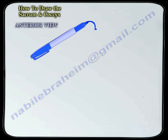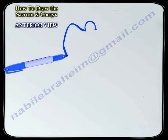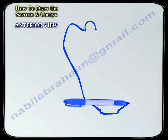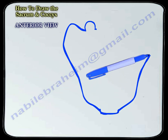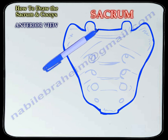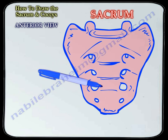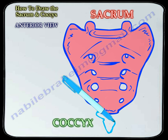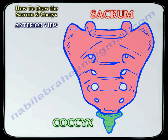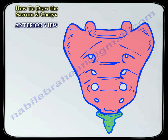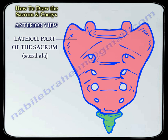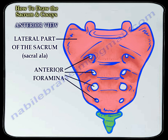Here is the anterior drawing of the sacrum. The important structures are the sacral ala, which is the lateral part of the proximal sacrum, and the anterior foramina.